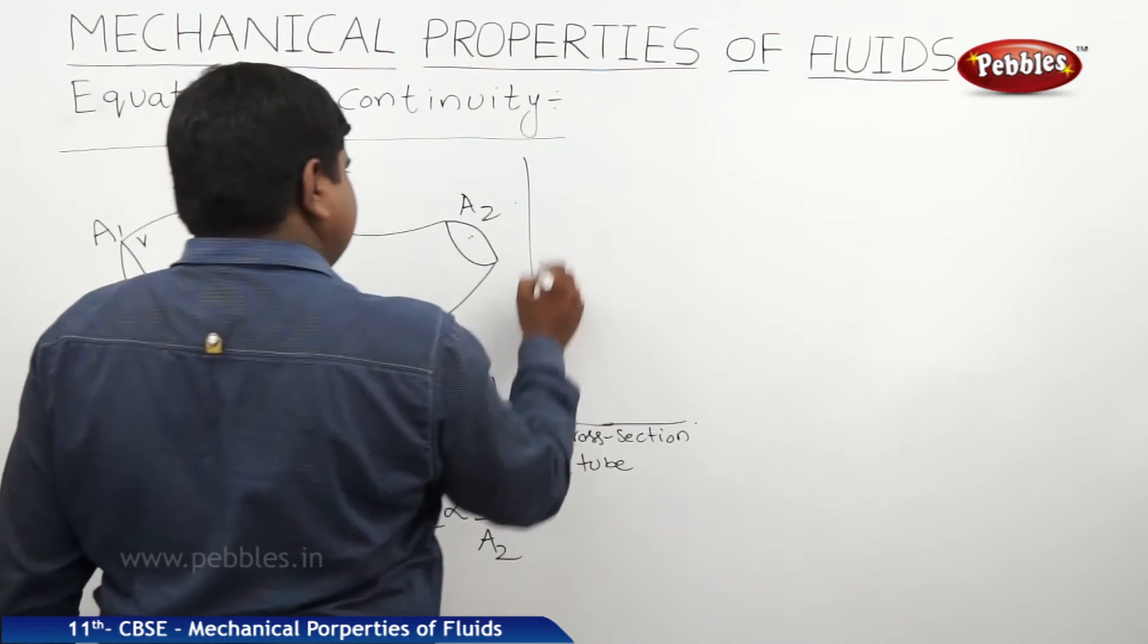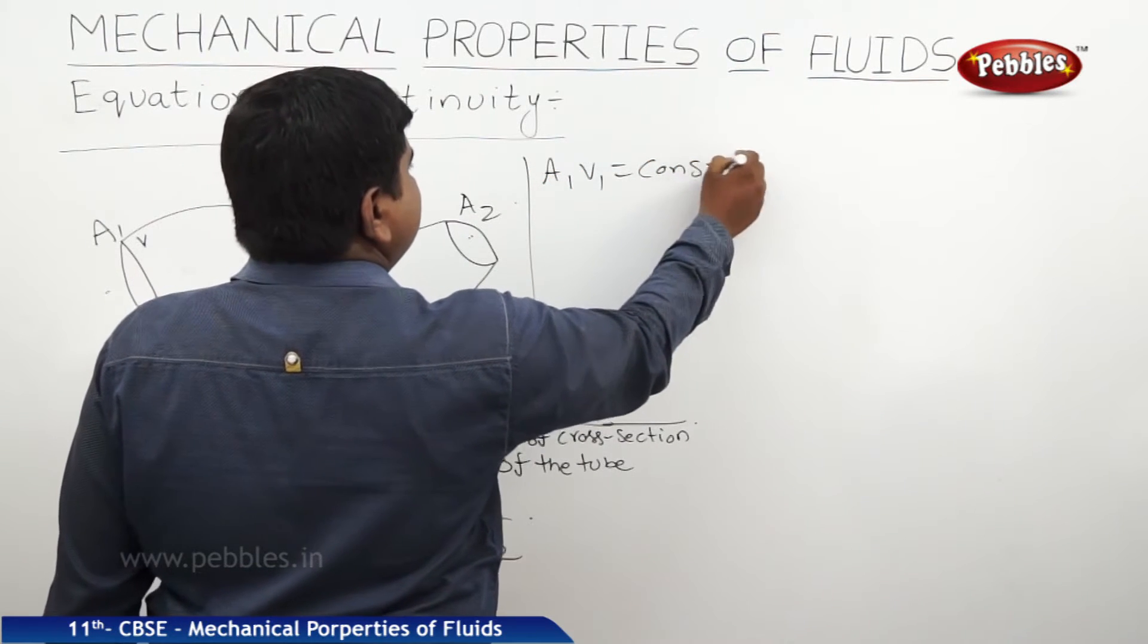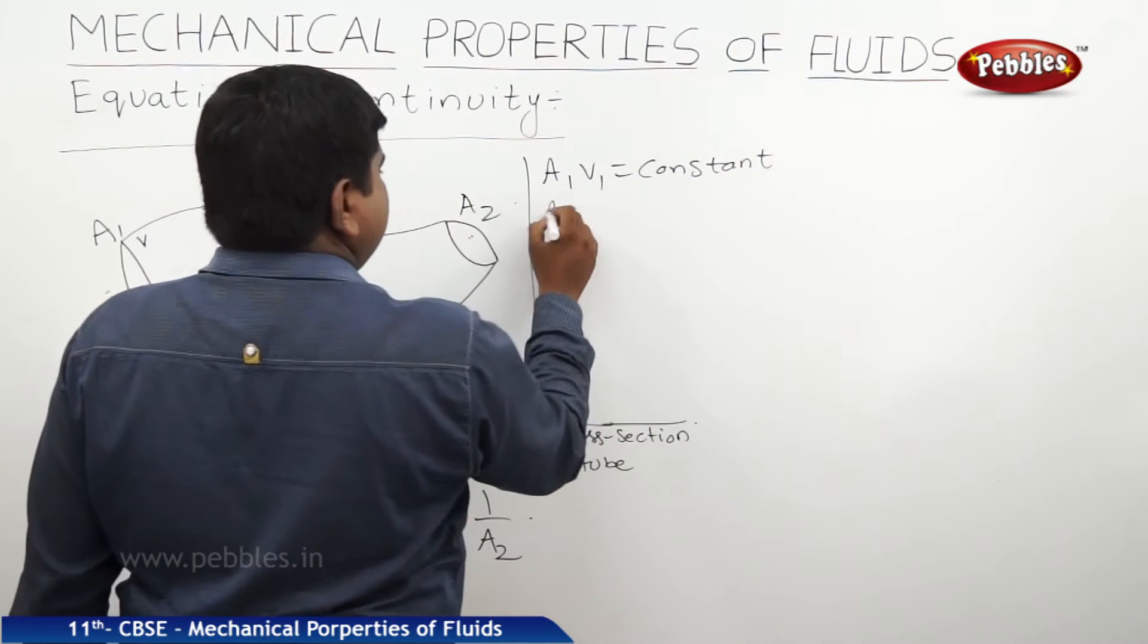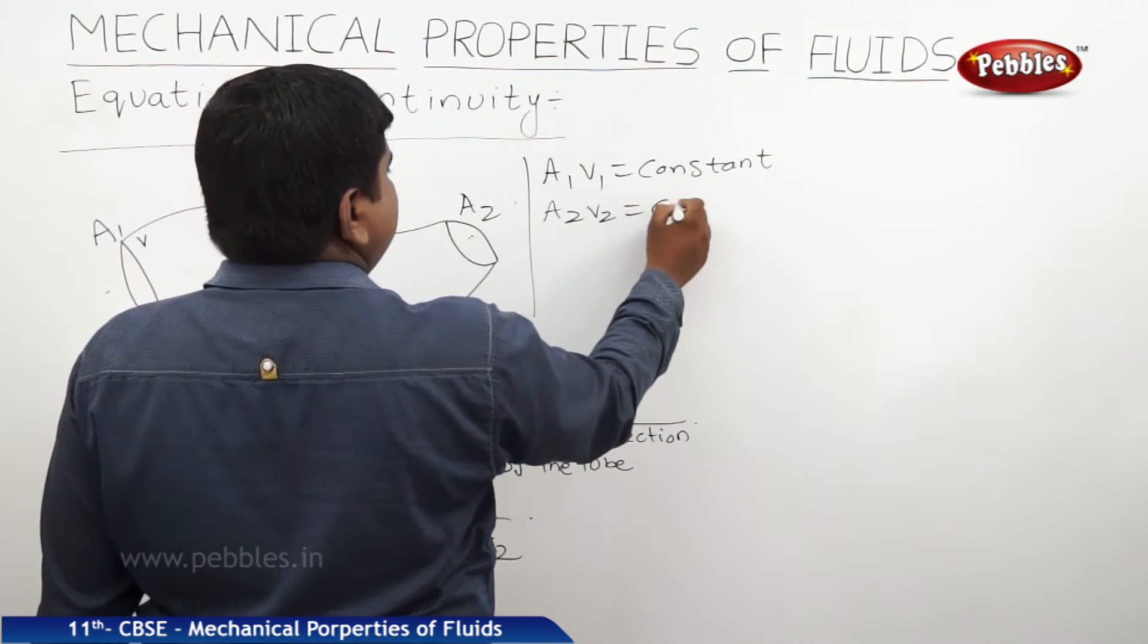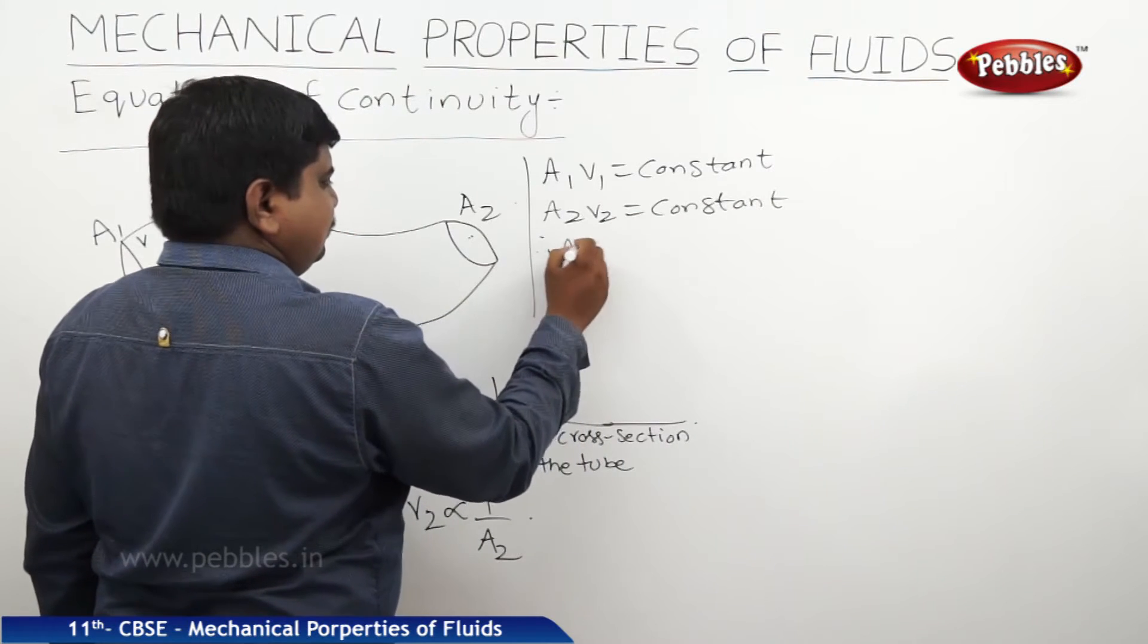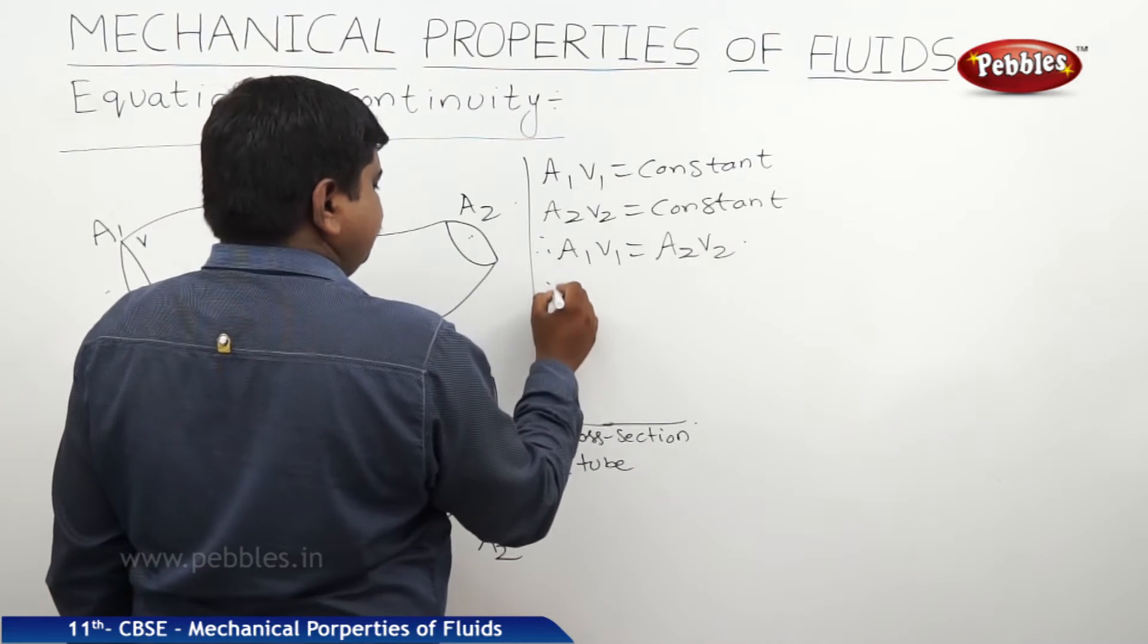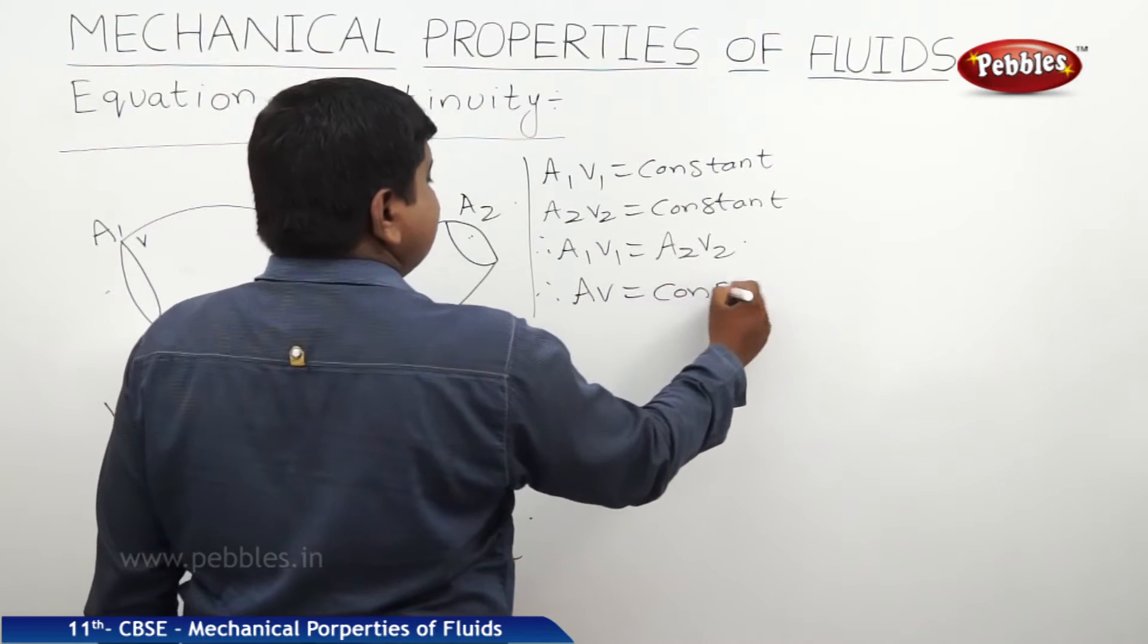From this, A1V1 equals constant and A2V2 also equals constant. Therefore, A1V1 equals A2V2. Hence, AV equals constant.